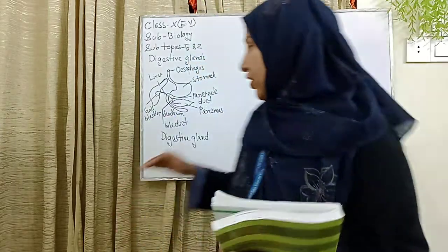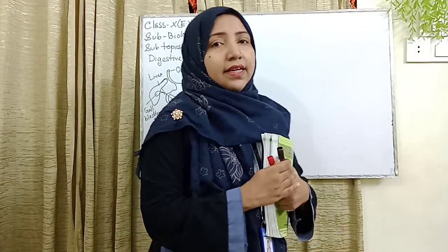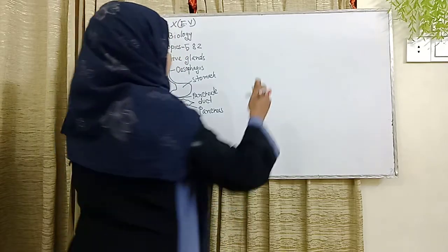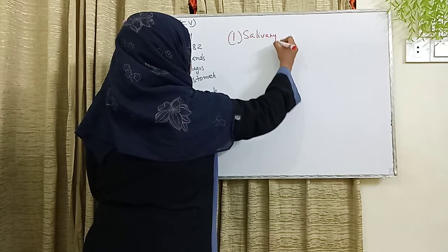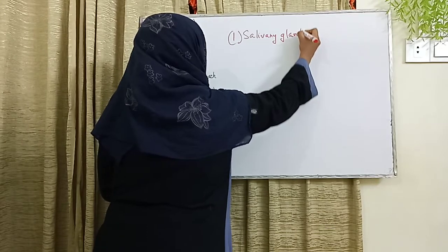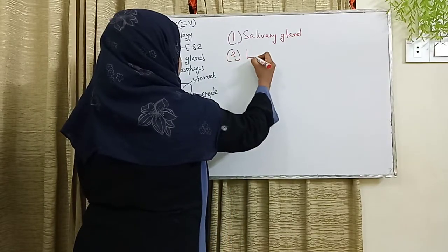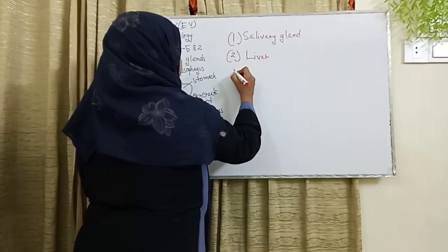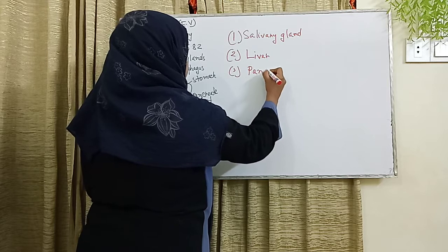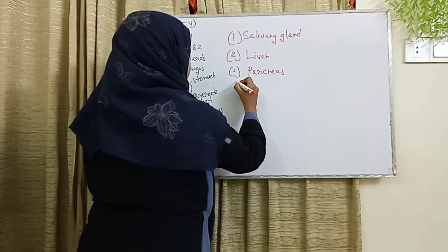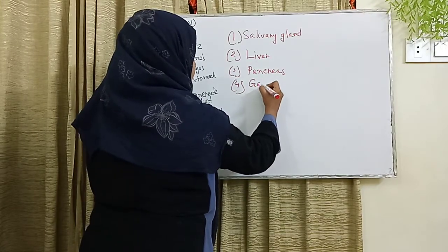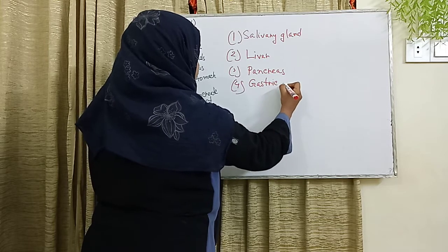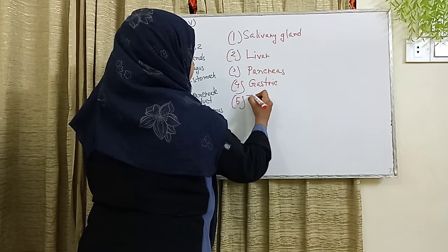In the human body, there are basically five types of digestive glands. Please see the board. First is the salivary gland. Second is the liver. Third is the pancreas. Fourth is the gastric gland. And fifth is the intestinal gland.